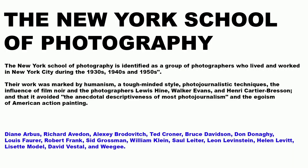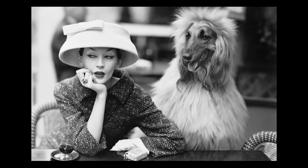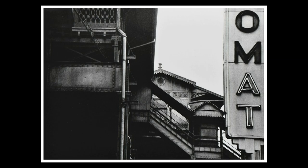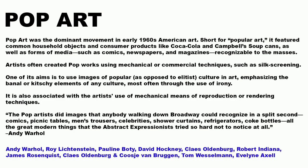The New York School of Photography is identified as a group of photographers who lived and worked in New York City during the 1930s, 1940s, and 1950s. Their work was marked by humanism, a tough-minded style, photojournalistic techniques, and the influence of Henri Cartier-Bresson, Lewis Hine, and Walker Evans. Their work avoided the anecdotal descriptiveness of most photojournalism and the egoism of American action painting. Here you can see interesting photographs from the New York School, including Robert Frank, capturing disparities in American society at this period.